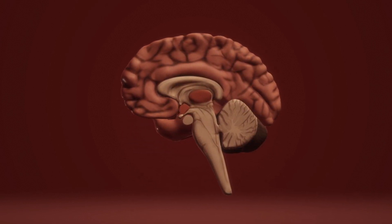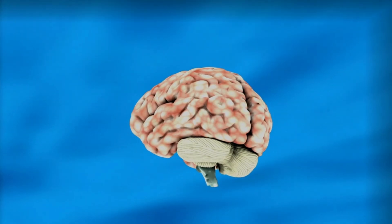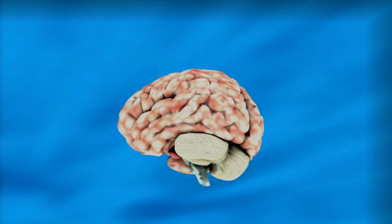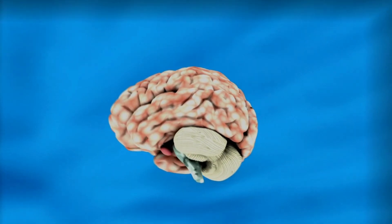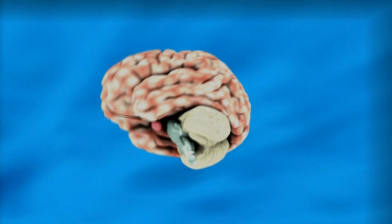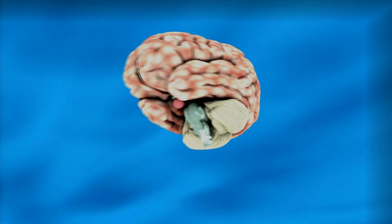Occipital lobe. The occipital lobe is primarily responsible for vision. It processes visual information from the eyes, helping us interpret shapes, colors, and motion.